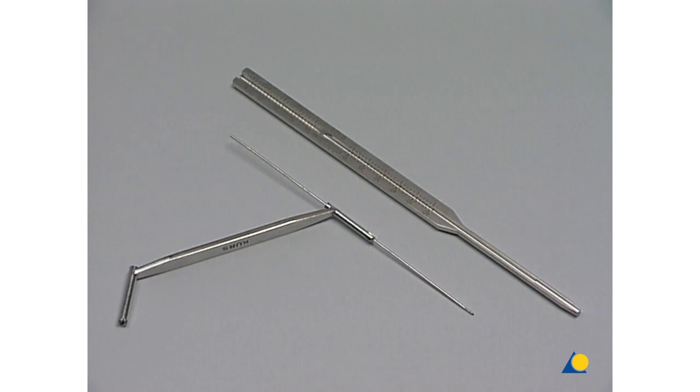For the implantation of the cannulated screws you will find the following instruments at your table: a tissue protection sleeve, threaded guide wires, and the direct measuring device to determine the correct screw length.